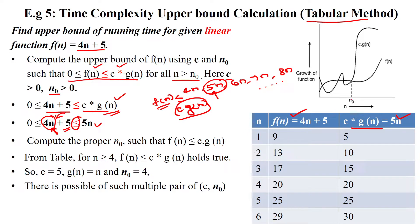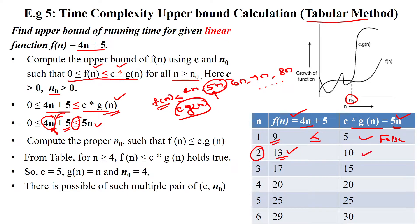We set up a table with f(n) = 4n + 5 and c·g(n) = 5n, starting from n = 1. At n = 1: f(1) = 4(1) + 5 = 9 and 5(1) = 5, so f(n) ≤ c·g(n) is false. At n = 2: f(2) = 4(2) + 5 = 13 and 5(2) = 10, so this is also false.